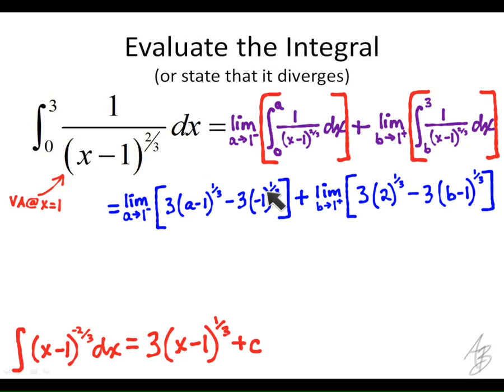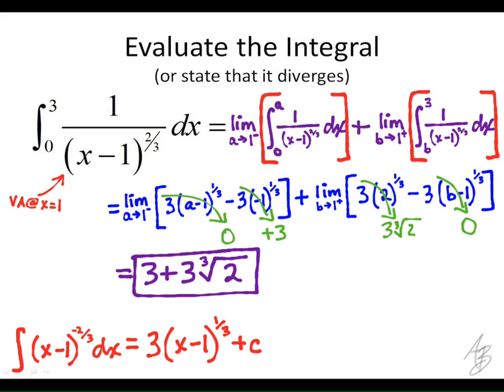And so 1 to the 1 third is going to be 1. So we're going to have, well, negative 3 times negative 1 is positive 3. And so we're going to have 3 times the cube root of 2 here. And we end up with 3 plus 3 times the cube root of 2.